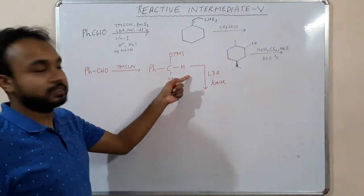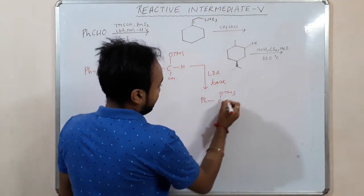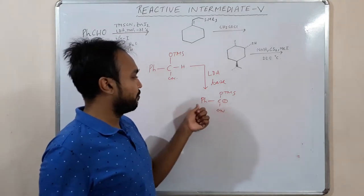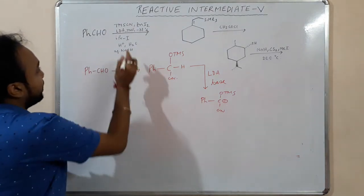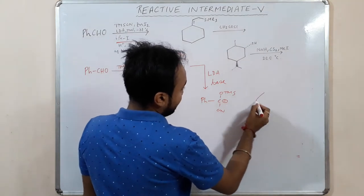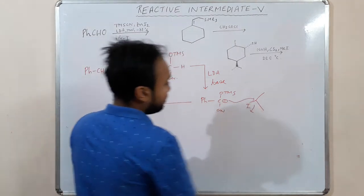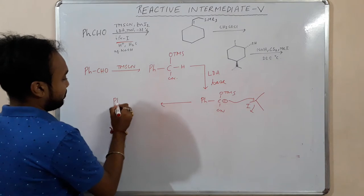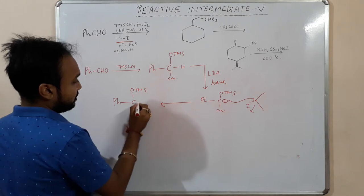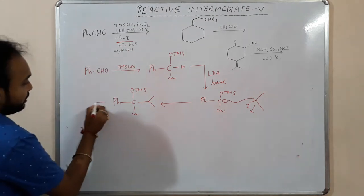LDA will abstract this proton — this is an acidic proton on the OTMS intermediate. This carbanion is stabilized by the phenyl group as well as the cyanide group. Now we have given isopropyl iodide, so this carbanion will attack the isopropyl iodide, displacing iodine, giving us the OTMS product with an isopropyl group attached.